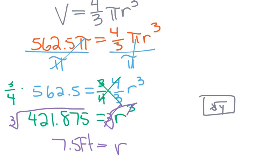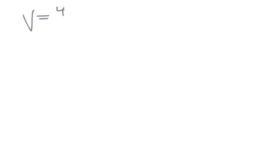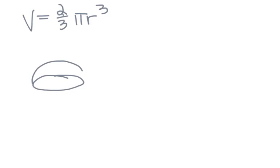Let's take a look at one last example dealing with a hemisphere — literally taking a sphere and chopping it in half. Since the volume of a sphere is 4 thirds pi r cubed, for a hemisphere we multiply by one half, which changes the fraction to 2 thirds. So the volume of a hemisphere is 2 thirds pi r cubed. To draw a hemisphere, you start with an oval and make a half circle on top or below it.